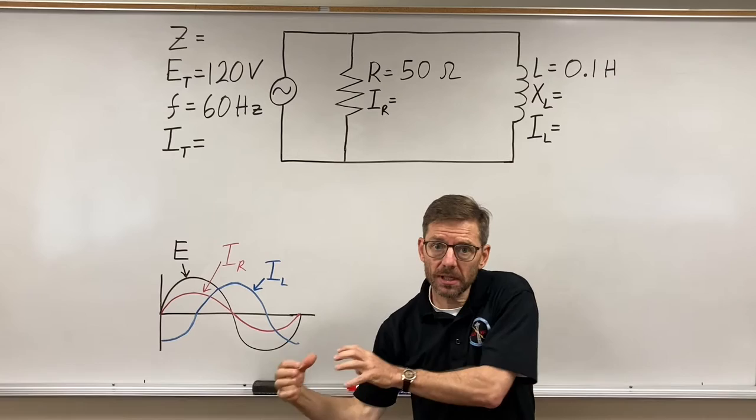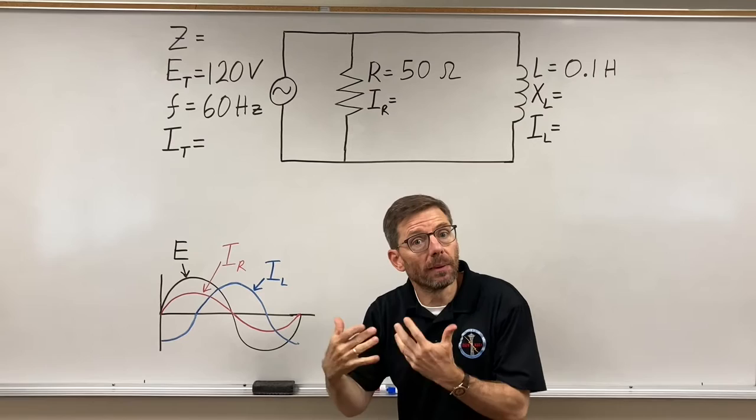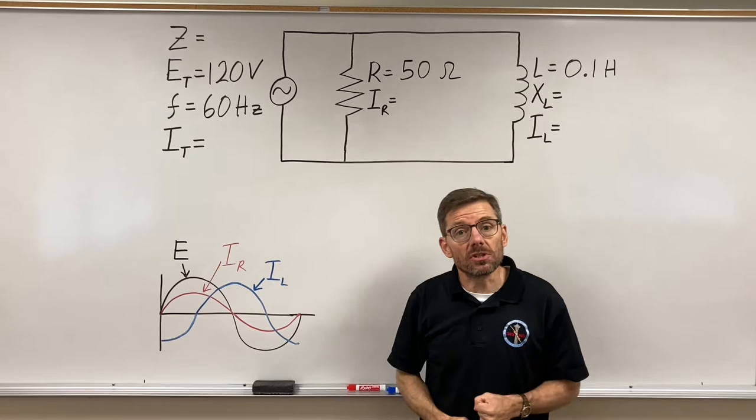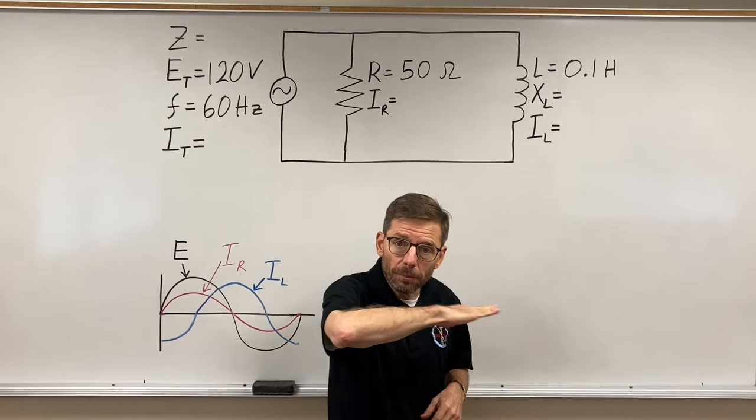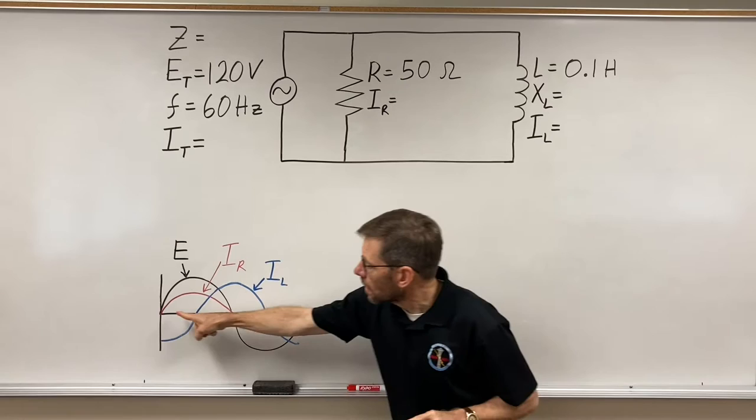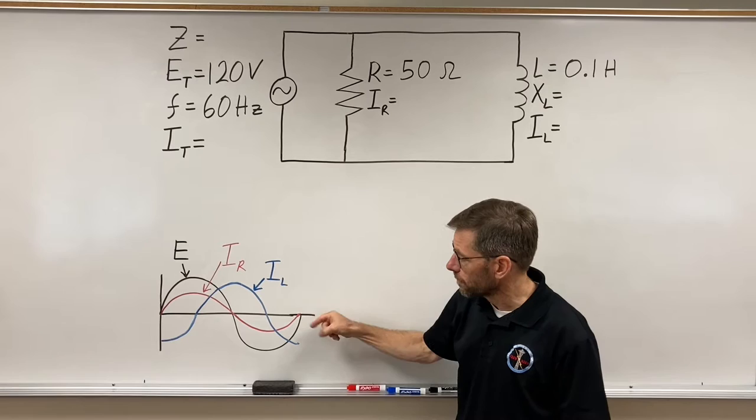In series, the constant, therefore my reference, was current in all parts of the circuit. Now that we've switched to parallel, what's the same at the source and on each branch is the voltages. So now voltage will be my reference. Voltages will be on the horizontal line. And here I have the various sine waves drawn up so we'll see how they compare.